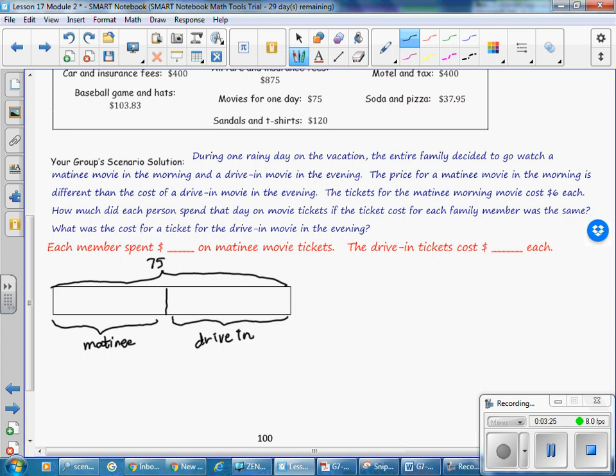And we know that the matinee cost $6 each and there were five people that attended. So we'll take the matinee portion of our money and we'll split it evenly with the five people. And they cost $6 each. So this is for John and Ag and the three children. So we have $6 times five people and we know that they spent a total of $30 at the matinee. And the remaining money was spent at the drive-in theater. So $75 spent on movies. Take away the $30 spent at the matinee means that they spent $45 at the drive-in theater.